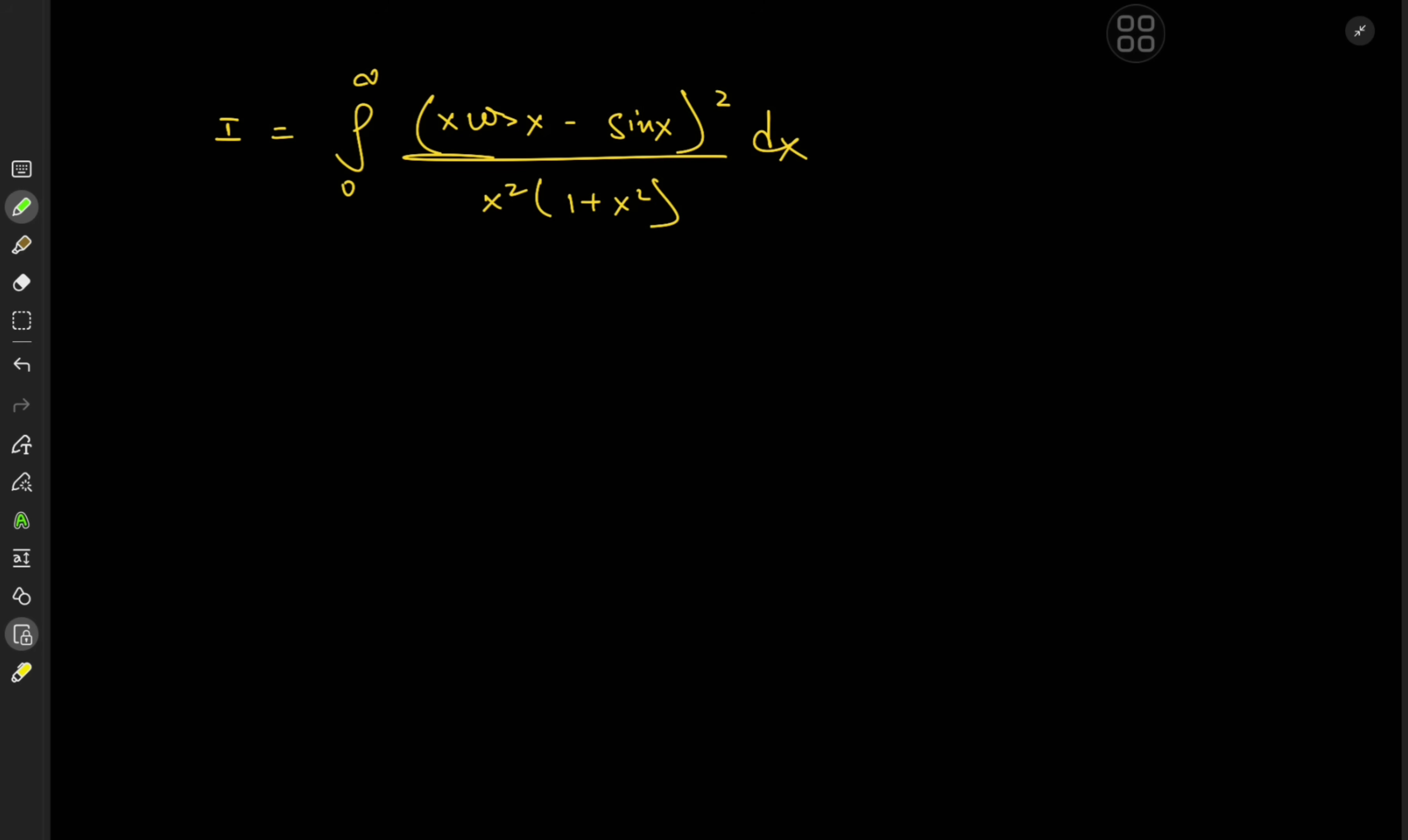Well the no-brainer would be to expand the square so that we have the integral from 0 to infinity of x squared times cosine squared x plus sine squared x minus 2x cosine x times sine x over x squared times 1 plus x squared, terribly sorry about that, dx.